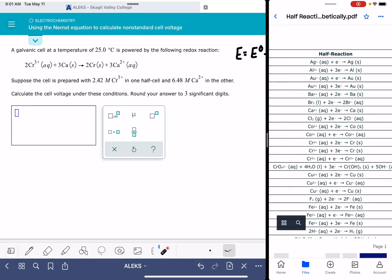We're going to do that in the traditional way, the way that we have been doing it. E standard equals the voltage at the cathode minus the voltage at the anode. And as a reminder, the reduction reaction is the one that takes place at the cathode.